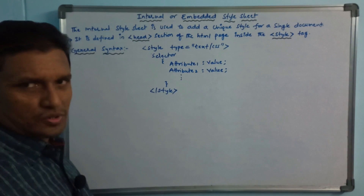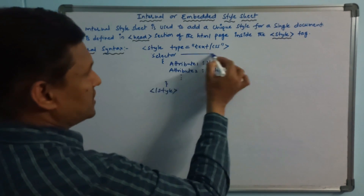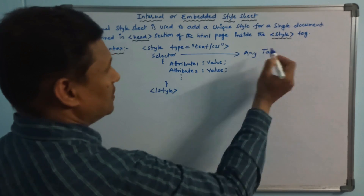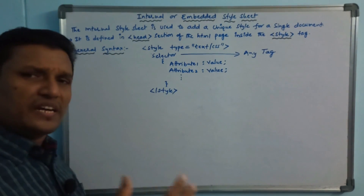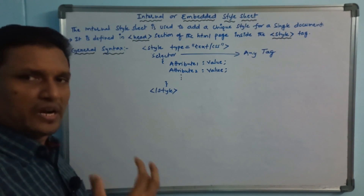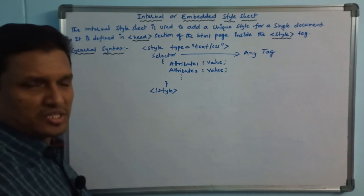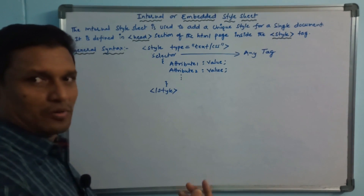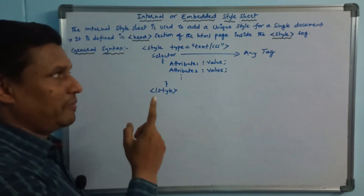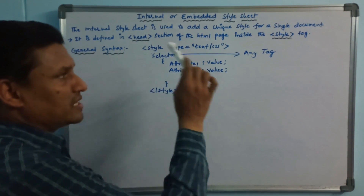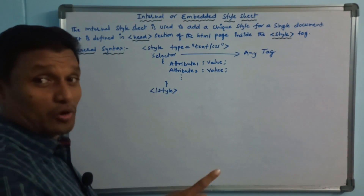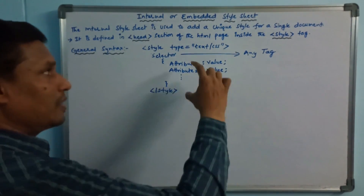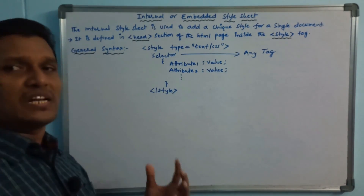Attributes are properties. When we apply style, we apply it to the properties with a colon between the property and its value, ending with a semicolon. Finally, a closing bracket closes the selector block, and the style tag is then closed.